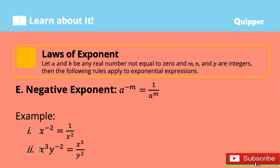Another example: x cubed times y to the power of negative 2. Since the only base with a negative power is y, take the reciprocal of y to the power of negative 2, then multiply by x cubed. Now we have x cubed over y squared.